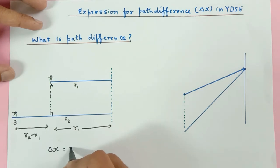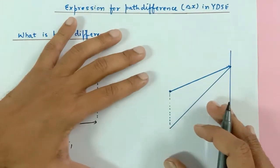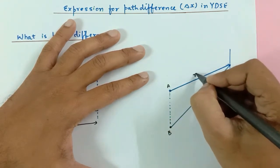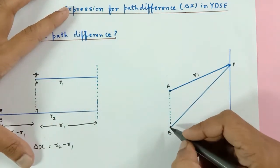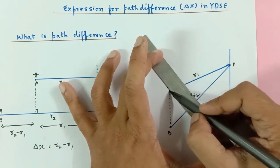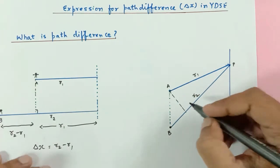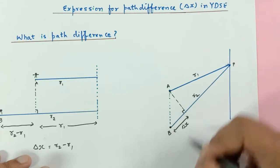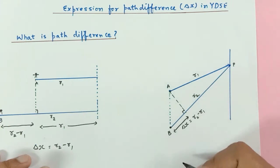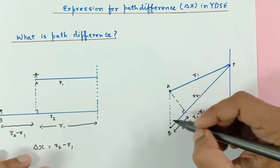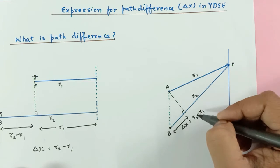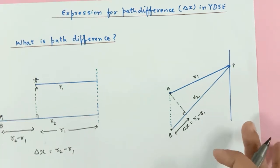So r2 minus r1 is called the path difference. In a similar situation, person A travels r1 and person B travels r2, both reaching point P. I drop a perpendicular line from A to B — this 90-degree distance is the path difference. If these two points are extremely close, I can approximate this as r2 minus r1; otherwise we need angles and trigonometric formulas.